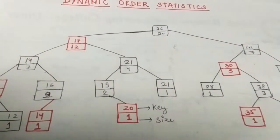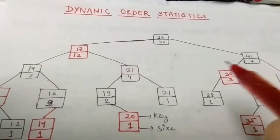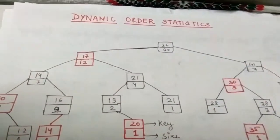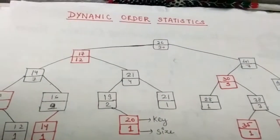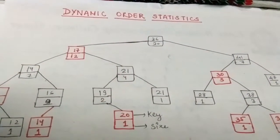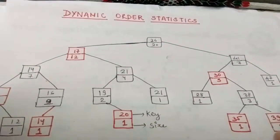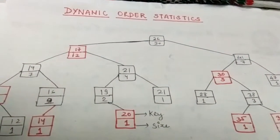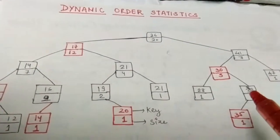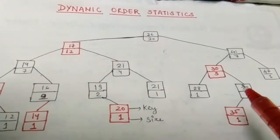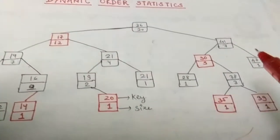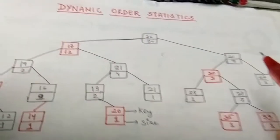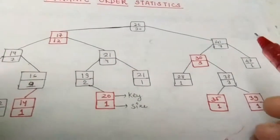Hello everyone. Today we are here with the video of dynamic order statistics. Dynamic order statistics is about order statistic trees, and the order statistic tree is simply a red-black tree with additional information stored in each node.